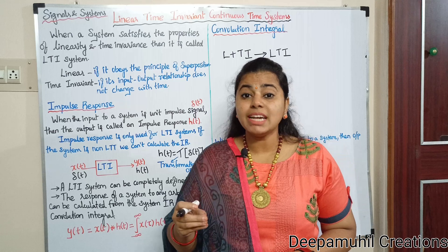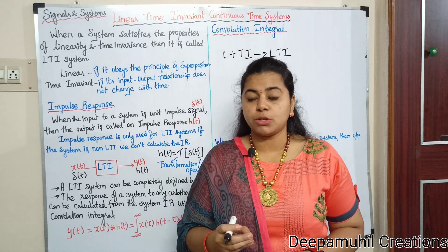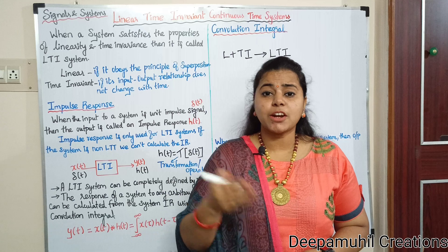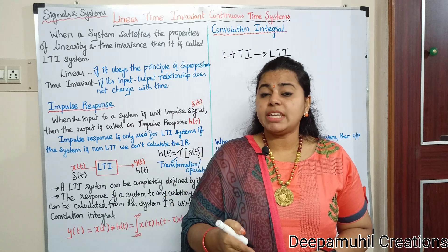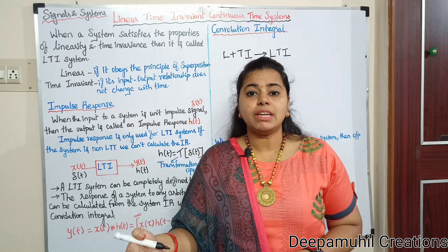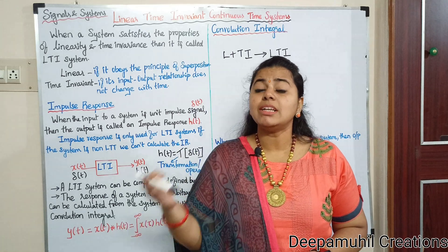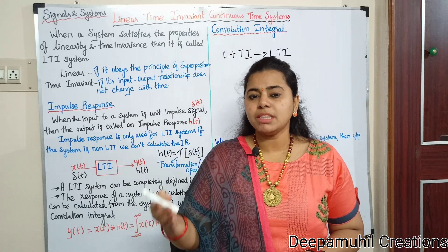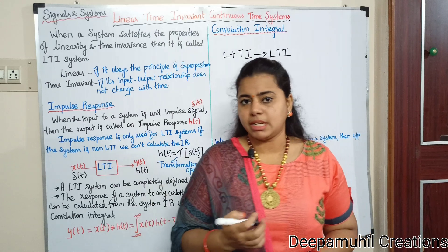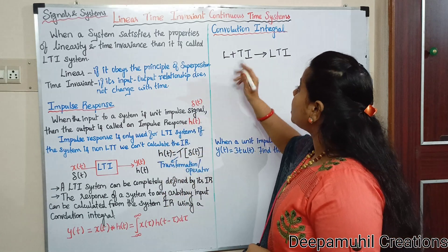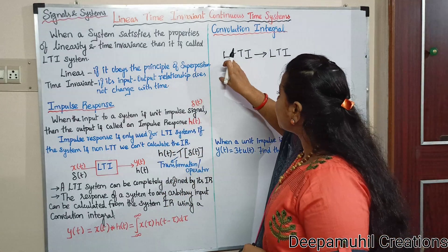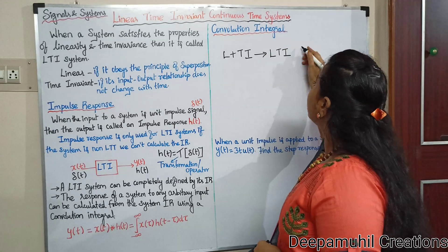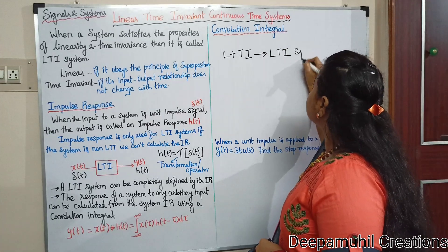Already in the first unit, Classifications of Systems, there are different systems: Linear or Non-linear, Time-Variant or Invariant, Causal or Non-causal, Static or Dynamic, Stable or Unstable. Especially when the Linear Property and Time-Invariant Property are both satisfied, that gives us LTI Systems.